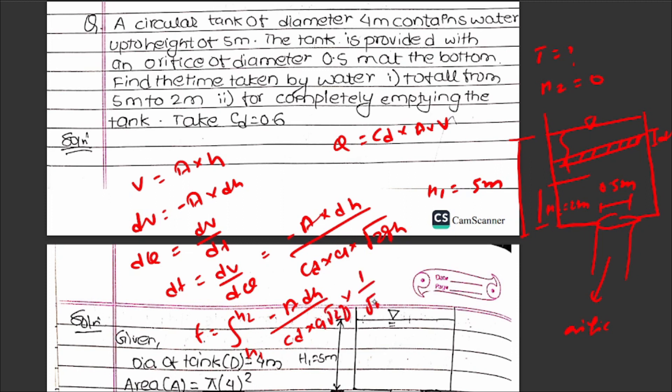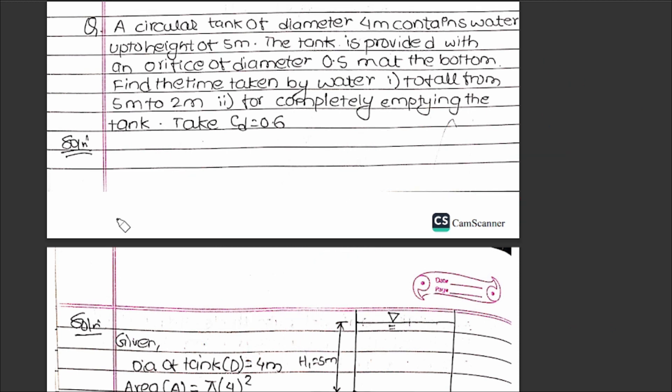The solution formula: t = (2A / (cd × a × √(2g))) × (√s1 - √s2). For completely emptying, s2 = 0, so t = (2A√h1) / (cd × a × √(2g)).